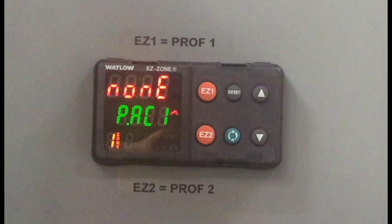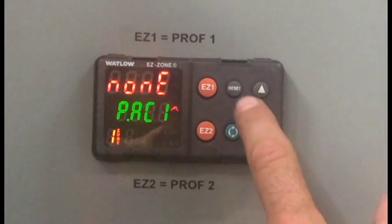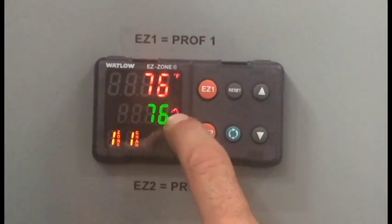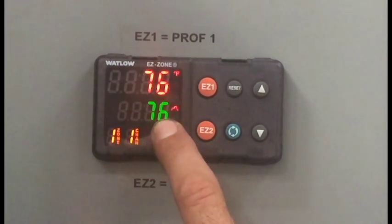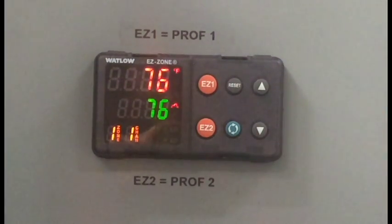Once I'm comfortable with what I've done, I want to go back to the main menu or home menu by pressing reset. You can see that the mountain icon indicates that the profile has been run, and the green setpoint will adjust according to the profile that you programmed in. The red process value should follow it.